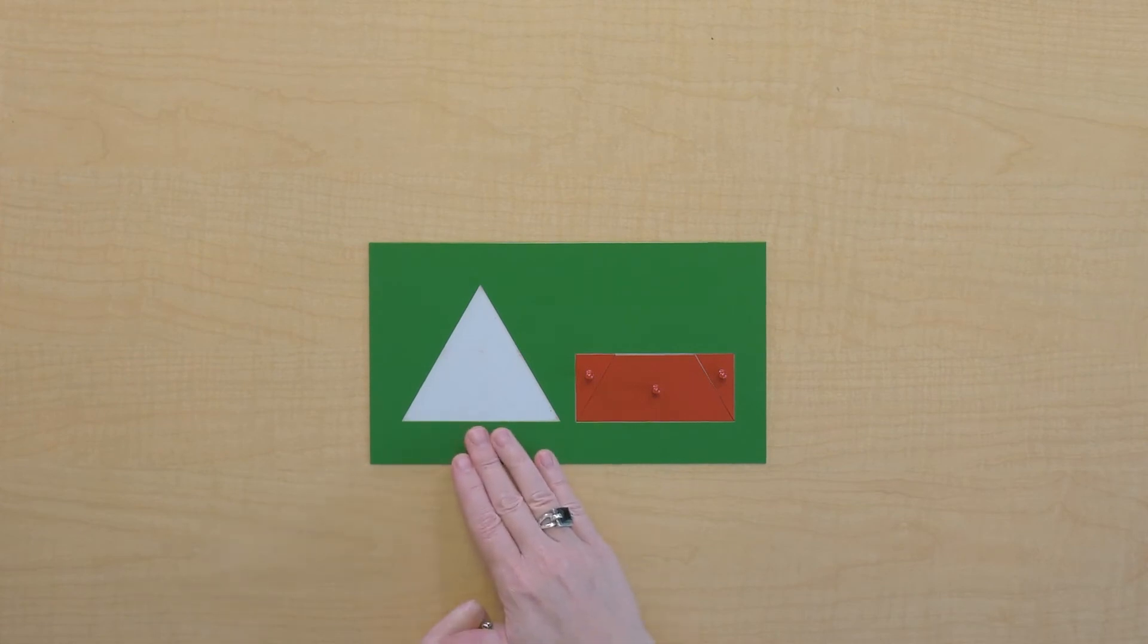So this triangle is equivalent to this rectangle when they have the same base, but the height of the rectangle is half the height of the triangle.